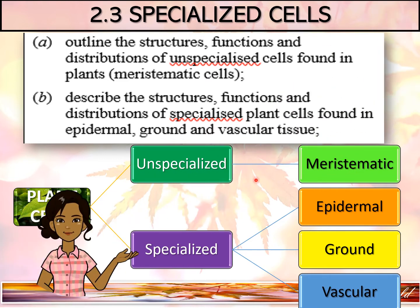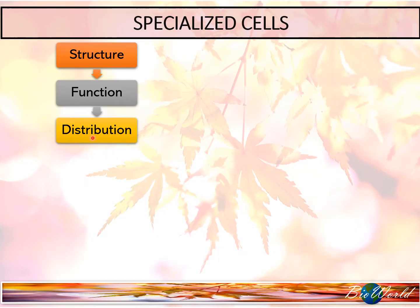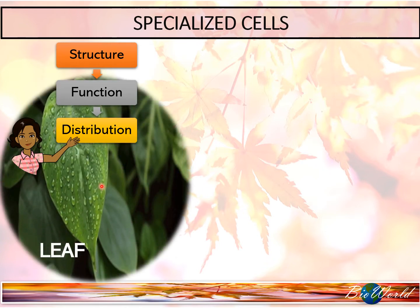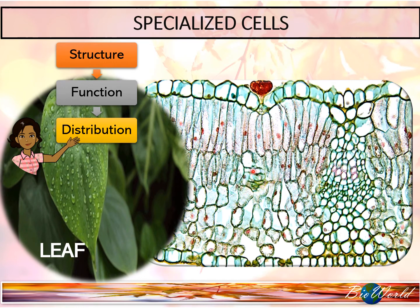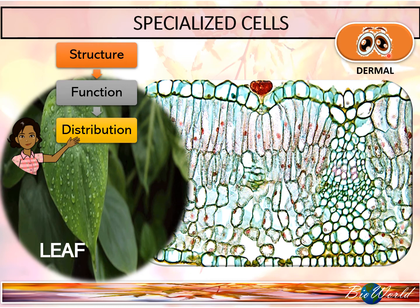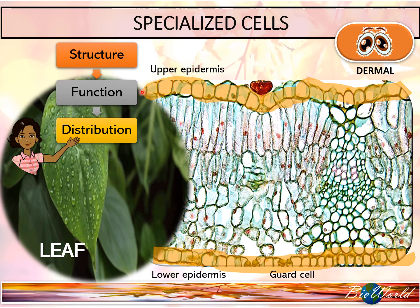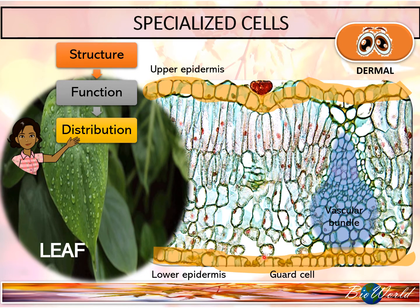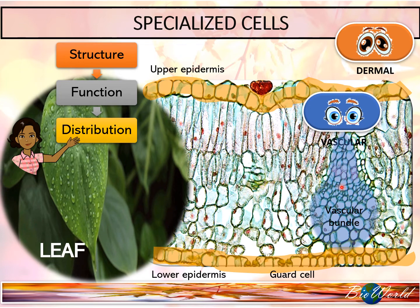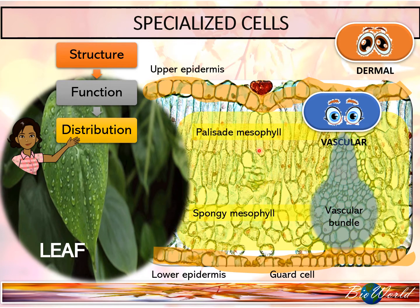Let's move on to specialized cells. I'll start with the distribution of the three specialized tissues. First, let's take the leaf. If we view the cross-section of the leaf, you will find that all three types of specialized cells are present, starting with the dermal tissues at the upper epidermis and lower epidermis, including the guard cells. In between the two epidermis layers, you will have the vascular bundle that contains the vascular tissues. The remaining cells, which include the spongy mesophyll and the palisade mesophyll, make up the ground tissues.